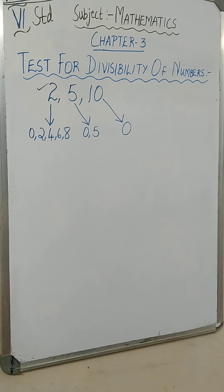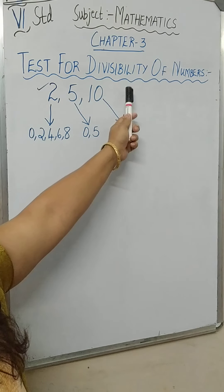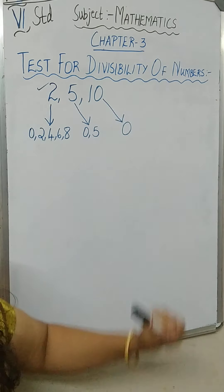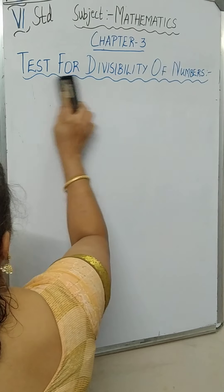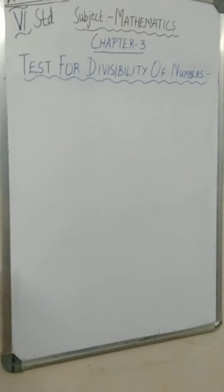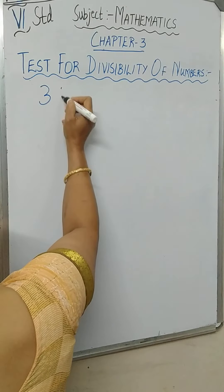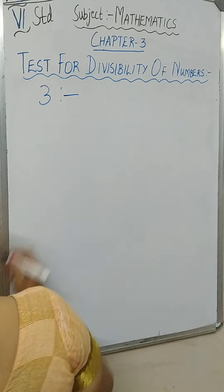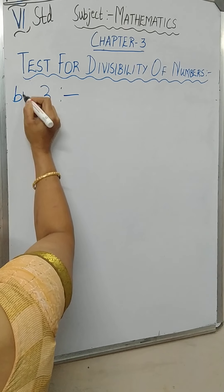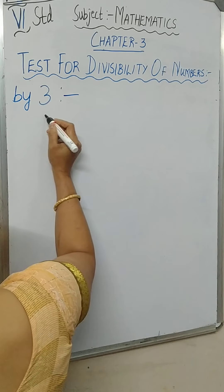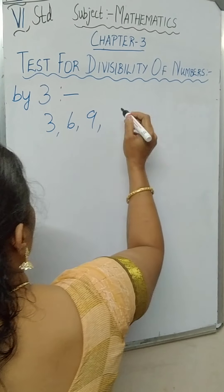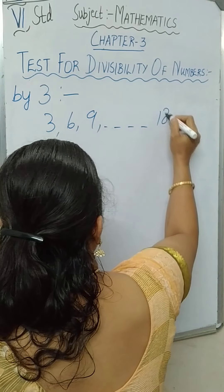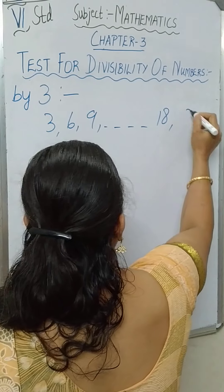Now in today's class, we will learn about the divisibility of different numbers. Let us start with 3. Which are the numbers which are divisible by 3? Of course it is 3, 6, 9, 18 or 27 — and it goes on like that.